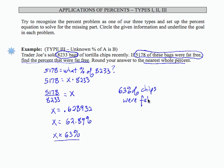And let's just do a quick check on this number, make sure it makes sense. So we have 5,178 out of 8,233. It seems like 63 percent is very reasonable.